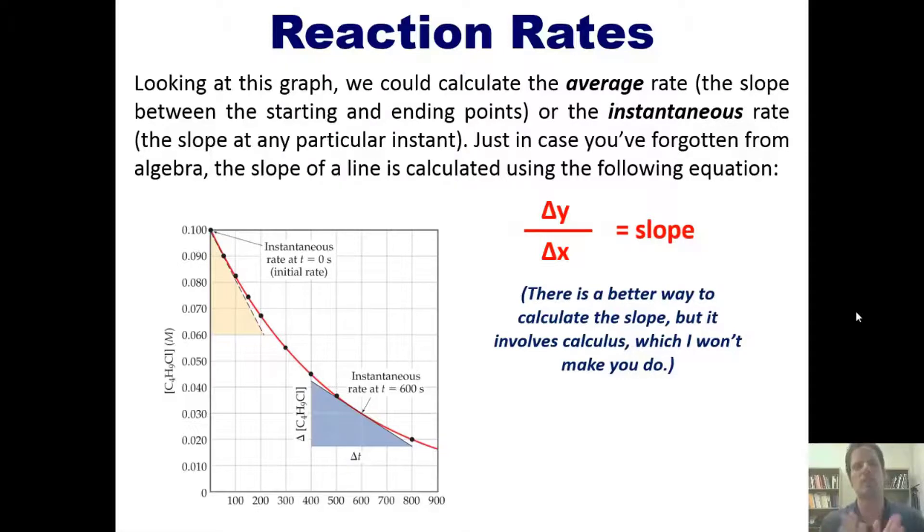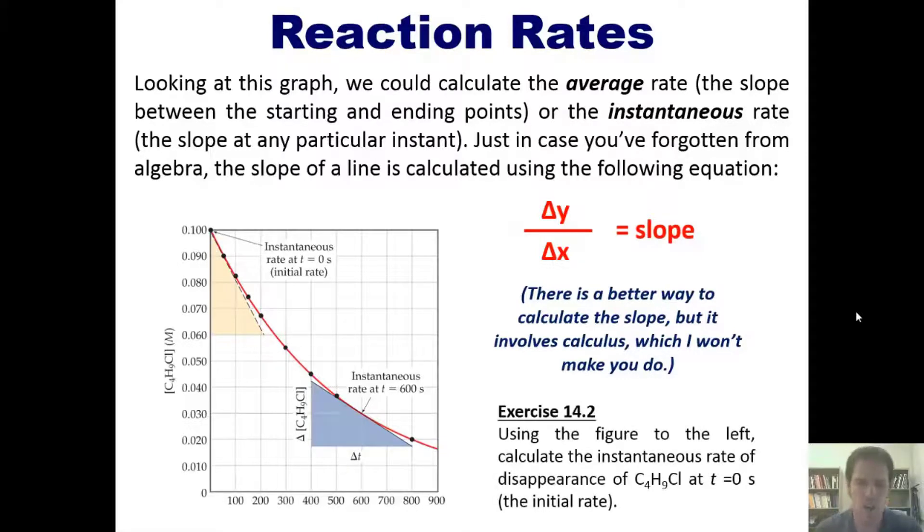So that brings us to a beautiful lecture exercise. I want you to use this figure to calculate the instantaneous rate of the disappearance of butyl chloride at t equals zero, that is, the initial rate. I'm not going to answer this question for you, but we'll let you instead answer it on your own. You feel comfortable? Good. Let's go on.